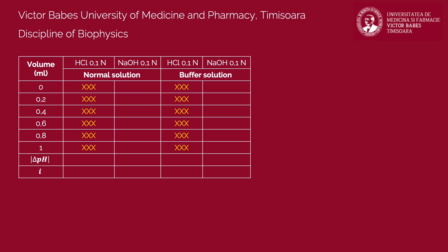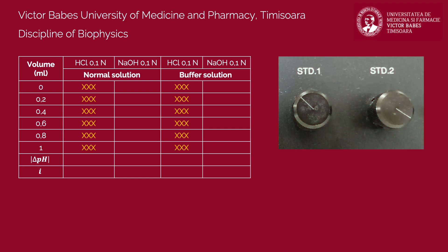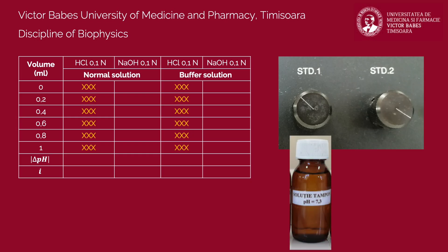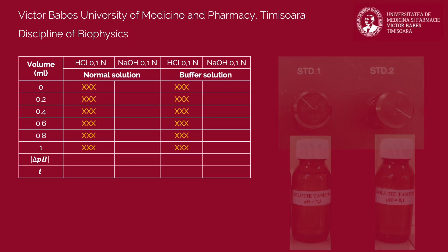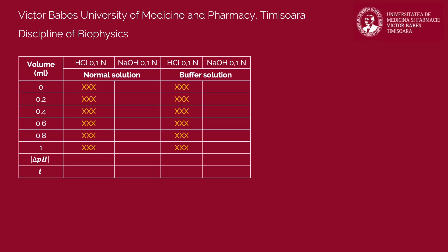In the second half of the experiment, you must calibrate the pH meter for the alkaline domain. This time, you will use the standard solutions of pH 7.3 and 9.1. After calibration, measure the pH of buffer and non-buffer solutions before and after adding amounts of 0.2 ml of sodium hydroxide solution. Fill the obtained values in the table.